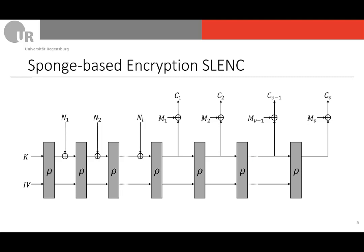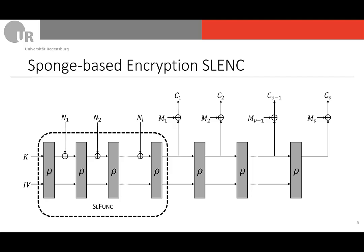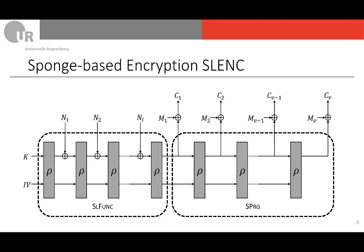Looking at the concrete sponge-based construction SL-ENC: we start with the key as the initial state together with some IV, then absorb the nonce using the classical sponge construction. This first part corresponds to the function F, or in this case called SLFUNC. In the second part, the squeezing phase, we output R bits at a time and XOR the message to derive the ciphertext. This squeezing phase minus the XORing step corresponds to the pseudorandom generator G, or the concrete sponge-based pseudorandom generator SPRG.